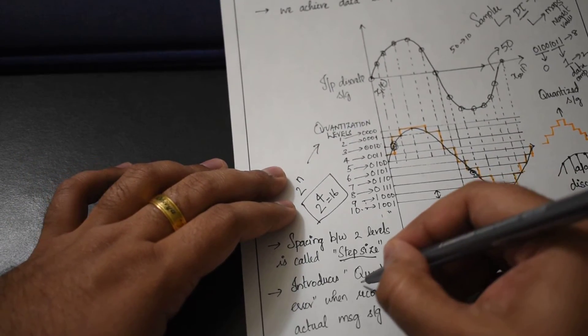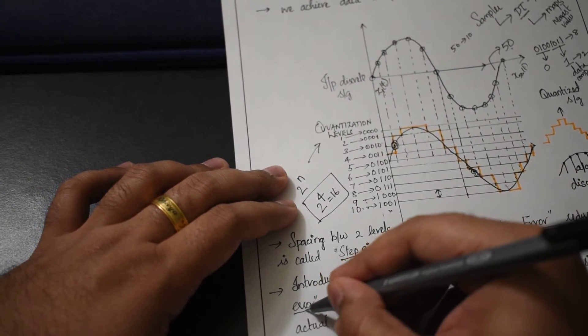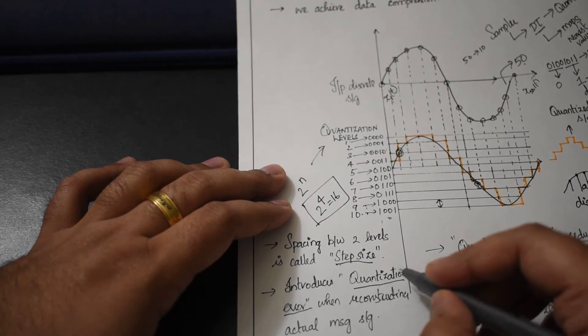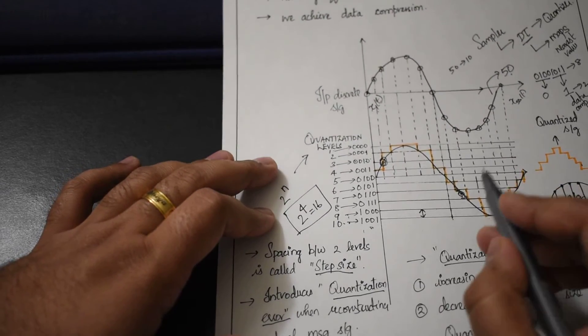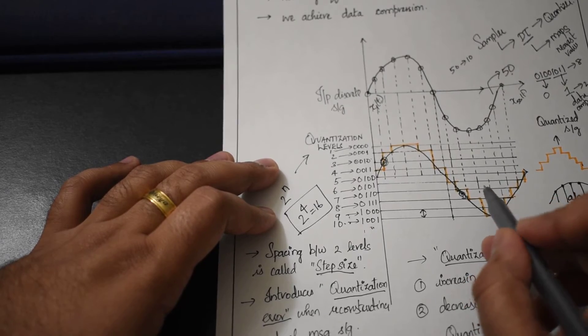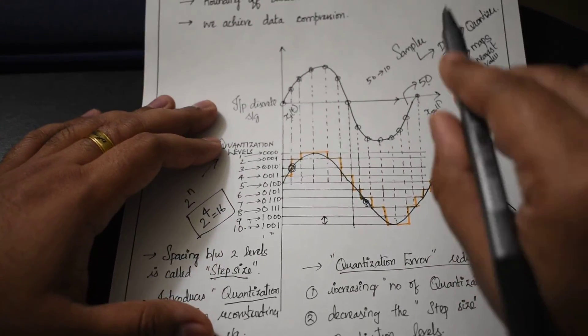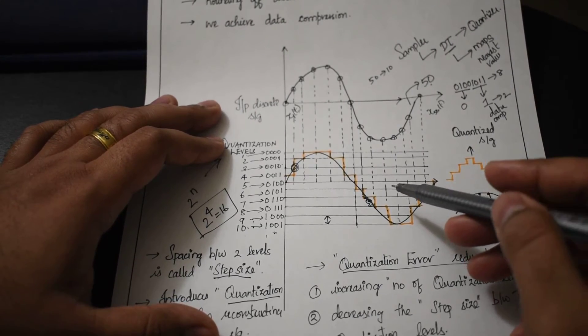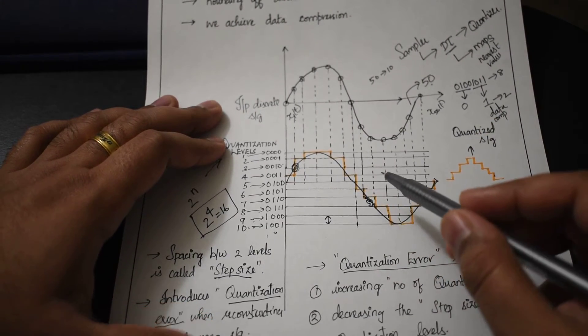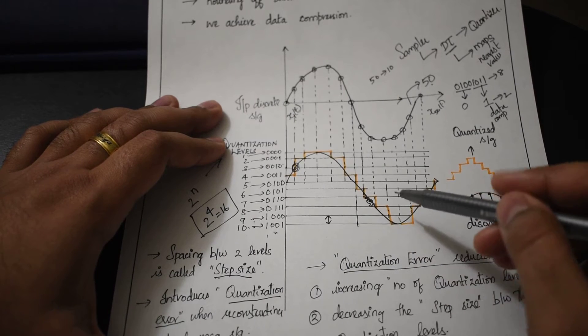The quantization error is induced into the system but not realized when transmitting. When we receive the signal and do source decoding, we have to reconstruct the original signal from the quantized signal - that's when we'll experience the quantization error.